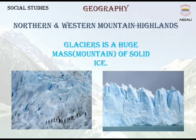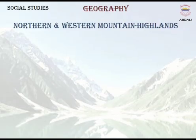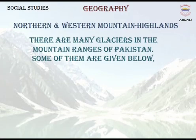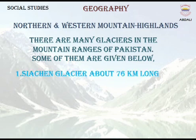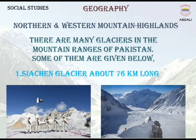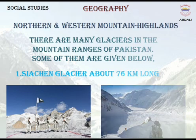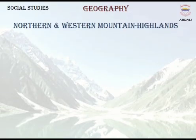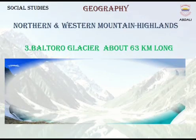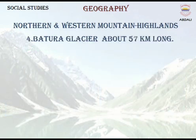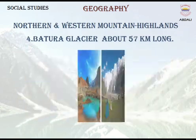Glaciers. A glacier is a huge mass of solid ice, also called the River of Ice. There are many glaciers in the mountain ranges of Pakistan. Four of them are: 1. Siachen Glacier, about 76 km long. 2. Hispar Glacier, about 67 km long. 3. Baltoro Glacier, about 63 km long. 4. Batura Glacier, about 57 km long.